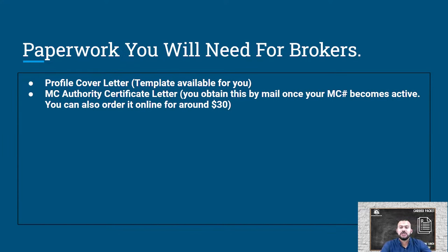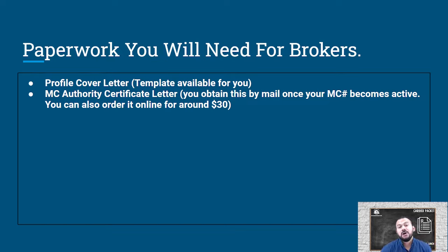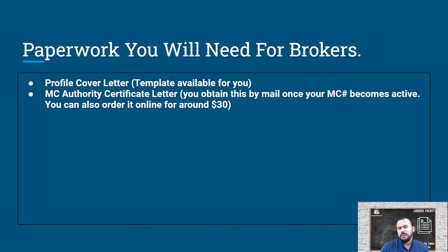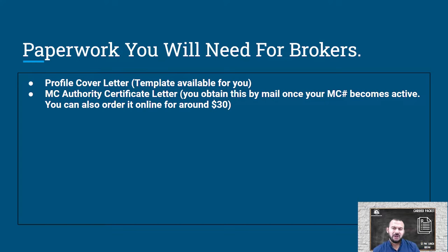The next thing you'll need is your MC authority certificate letter. You obtain this by mail once your MC becomes active, and you can also order it online for around thirty dollars. You'll have to wait about seven business days after your MC is active, but if you Google 'MC authority certificate letter purchase' you'll find companies where you can buy it same day. Prices vary but shouldn't be higher than thirty dollars — you may find something in the twenty dollar range.